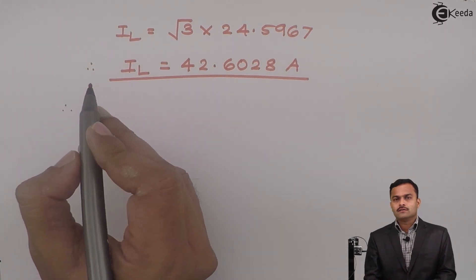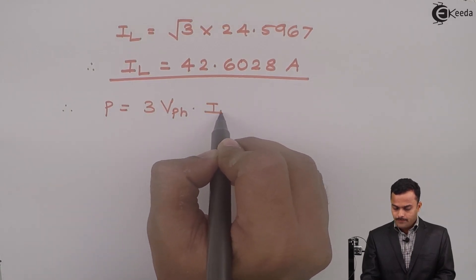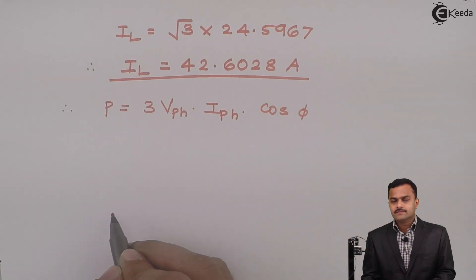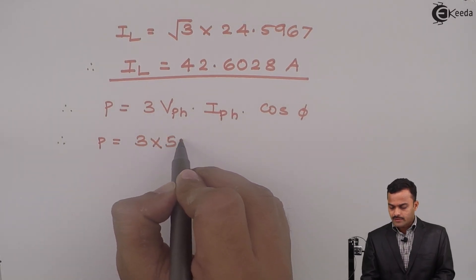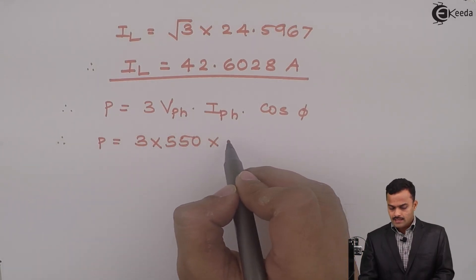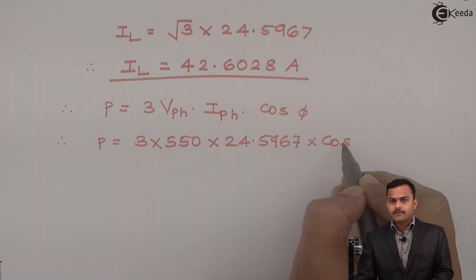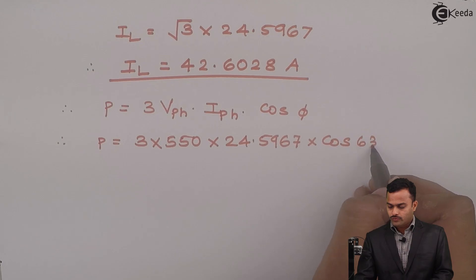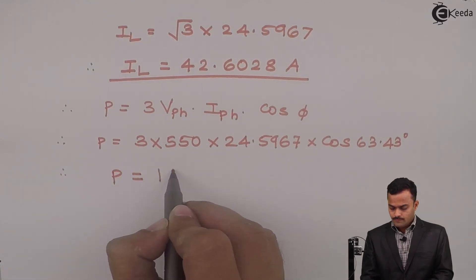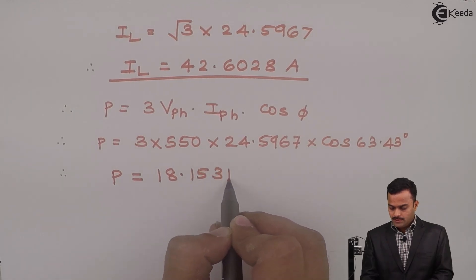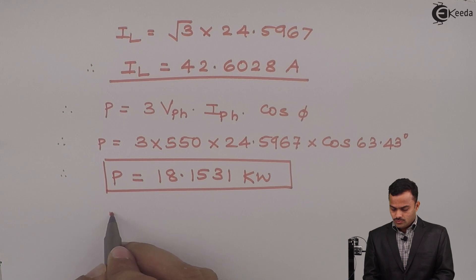Let's calculate all the powers now. Power drawn is nothing but active power P. So P equal to 3 VPH IPH into cos phi. So P equal to 3 times VPH 550, IPH 24.5967 and cos phi 63.43. If you solve I will get P power drawn equal to 18.1531 kilowatt.